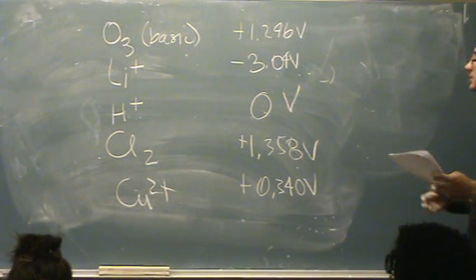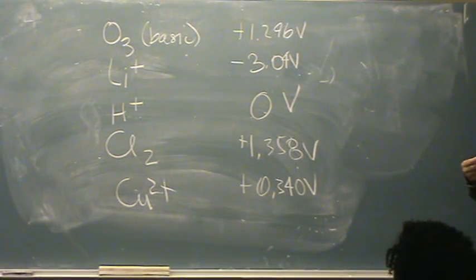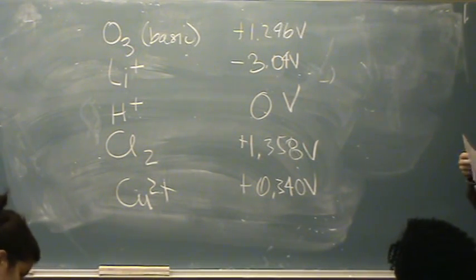So the one that's most easily reduced is the one with the most positive charge. It looks like Cl2 is our winner.